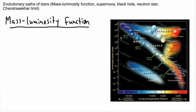In this video we're going to be talking about the evolutionary path of stars — in other words what actually happens to stars as they leave the main sequence and what are the eventualities for a star. So we're going to talk about the red giant and what happens after that stage.